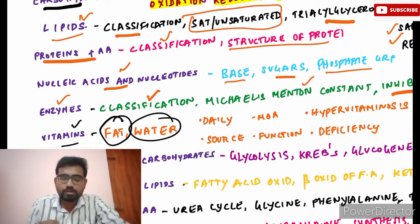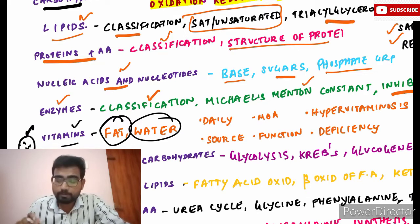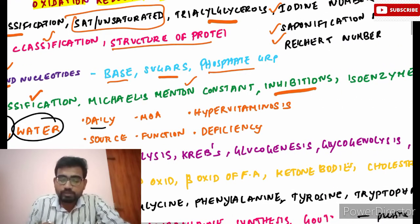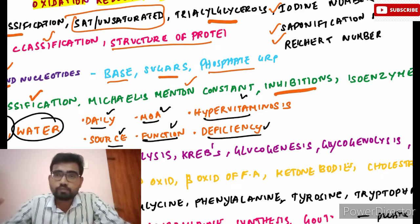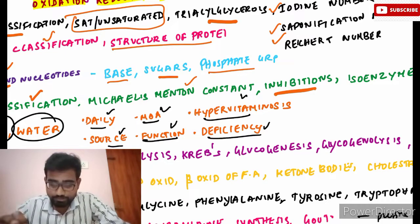After enzymes, move on to vitamins — fat-soluble and water-soluble. Vitamins is a very important topic in biochemistry. You should read about the daily requirements, sources, mechanism of action, functions, hypervitaminosis, and what happens in cases of deficiencies.